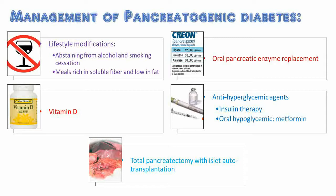Lifestyle modifications. Abstaining from alcohol and smoking cessation are highly recommended as both exacerbate progression of underlying pancreatic inflammation, fibrosis, and pain. Medical nutritional therapy should advise eating meals rich in soluble fiber and low in fat, together with oral enzyme replacement, which is particularly important for fat digestion and absorption, helping to control symptoms of steatorrhea and protect against fat-soluble vitamin deficiency. Maintaining sufficient levels of vitamin D is also essential to prevent metabolic bone disease and osteoporosis.